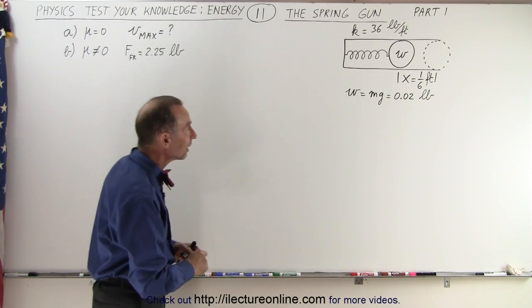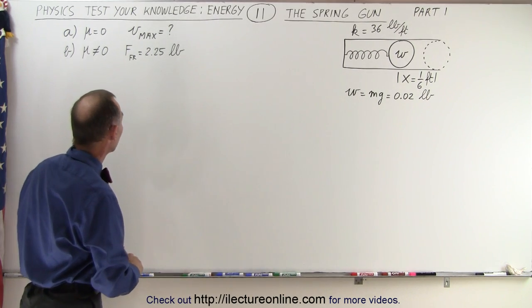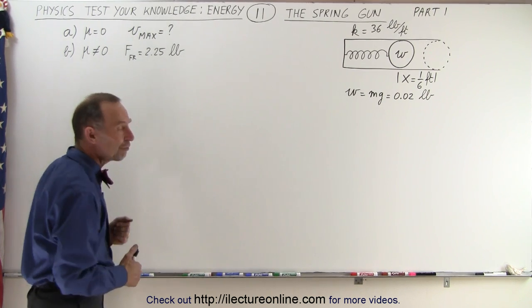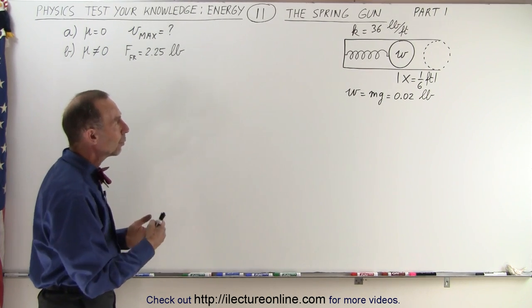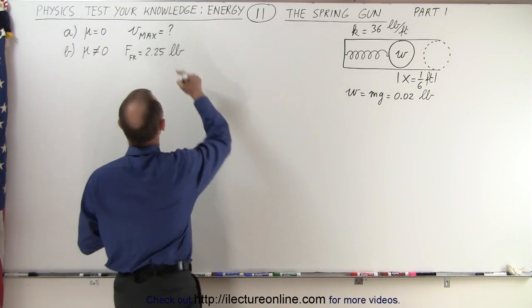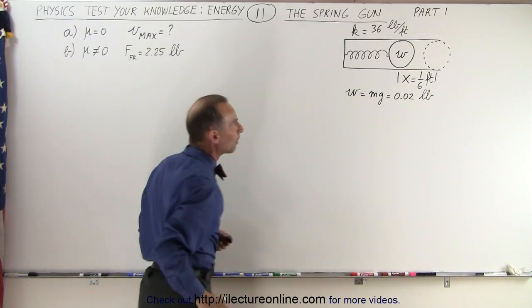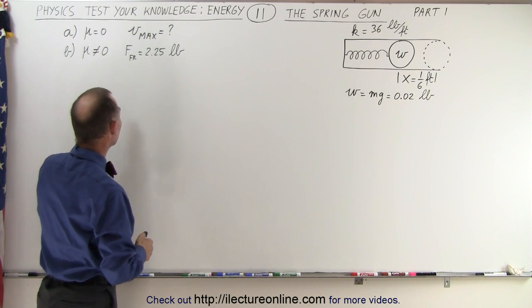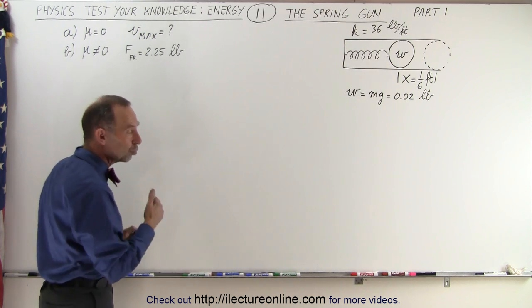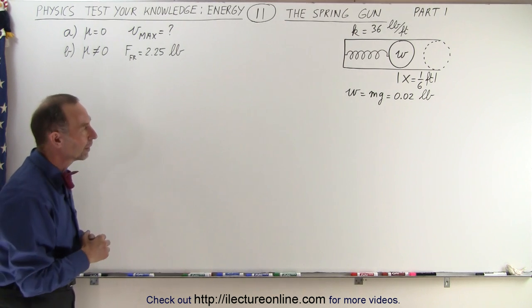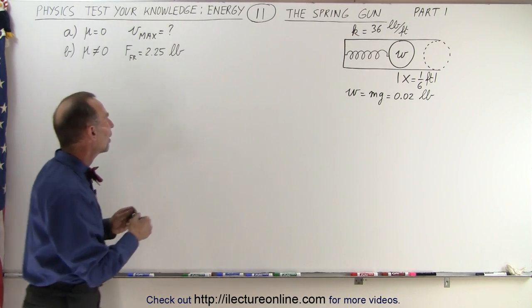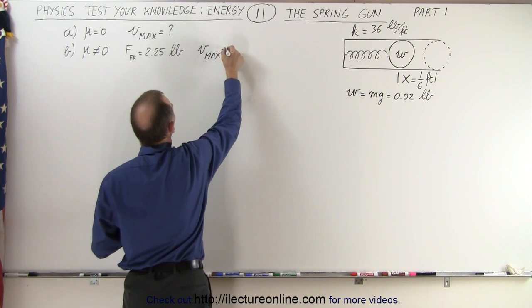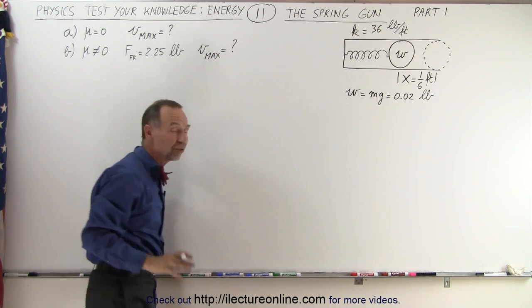Yes, as you can see we're using English units on this one. We're going to solve this in two ways. First, we're going to assume there's no friction in the barrel and we want to know what the maximum velocity is when the bullet comes out of the barrel. The second part, we're going to assume there is friction and that the friction force is a constant 2.25 pounds. What will be the velocity max when it leaves the barrel this time? We can assume that's going to be slower.